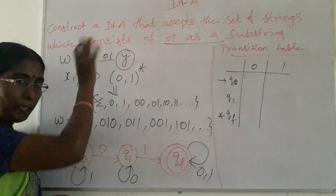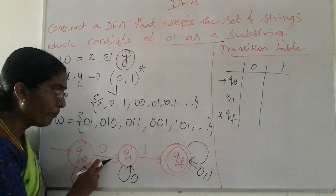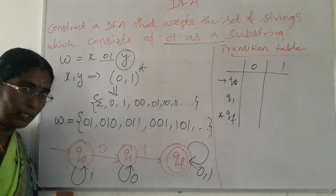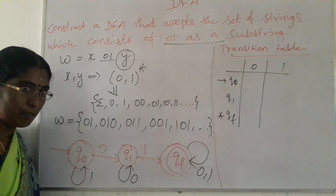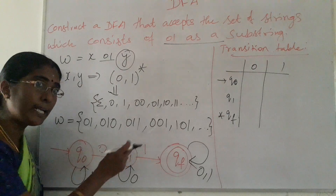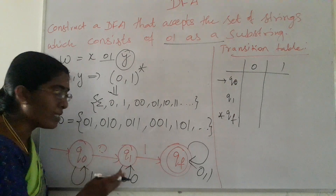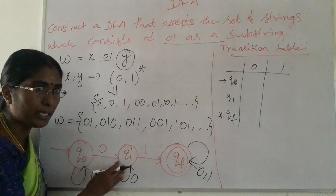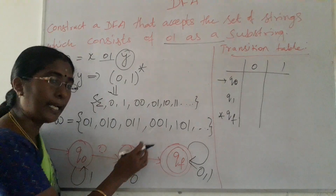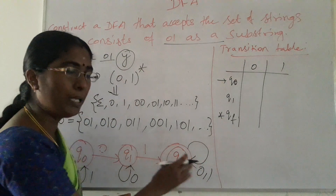So for both '0' and '1' at state QF, we make self-transitions. This is the complete DFA. From the start state Q0 we move to intermediate state Q1 for input '0', and from Q1 we move to final state QF for input '1'. If the string starts with '1', it does not lead to an acceptance state — self-transition at Q0. If it reads '0', it proceeds to Q1. From Q1, reading '1' moves to QF. Reading '0' again keeps it at Q1 via self-transition. After seeing '01', any sequence of symbols is accepted via self-transitions at QF.